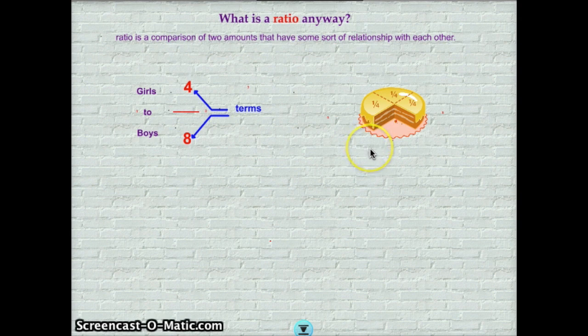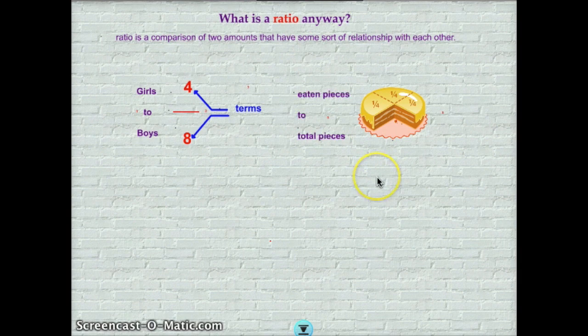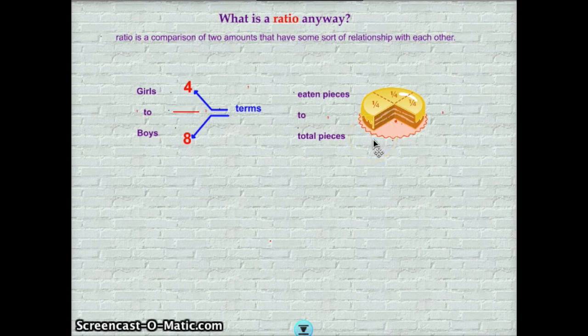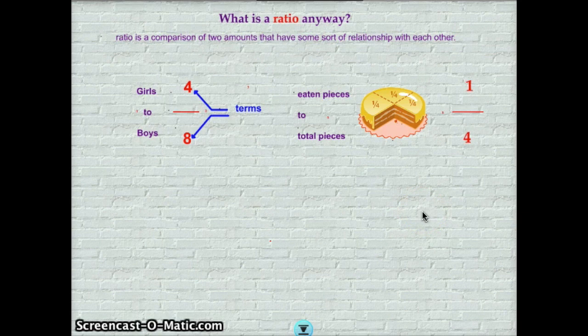In this case, we have a cake that's been split into four parts, and somebody has mysteriously eaten one. But with regard to this cake, we're looking for the eaten pieces to the total pieces. And so you could think about what is the relationship of eaten pieces to total pieces. And you can see that there's one eaten piece, and there were four total pieces before somebody came along and ate it. So the ratio is one to four.